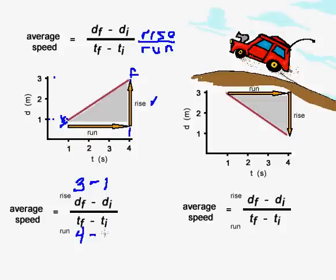Three minus one is two, and four take away one is three. So the average speed for the slope of this line is two thirds. Two divided by three is 0.66 meters per second.